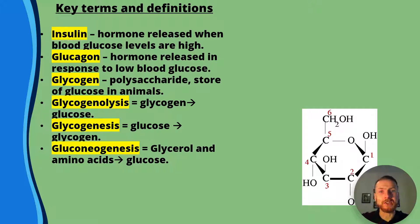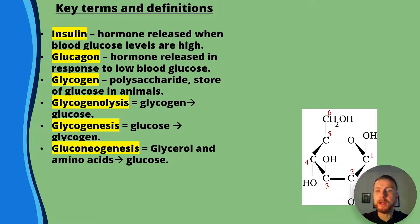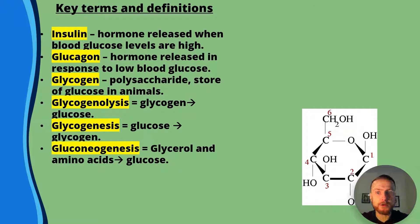Gluconeogenesis: neo means new, so it's making glucose in a new way. Gluco meaning glucose, neo meaning new, genesis meaning create. So glycerol and amino acids become glucose. Fatty acids can also become glucose too. Remember, all of those biological molecules — proteins, carbohydrates, and lipids — are made up of carbon, hydrogen, and oxygen, so you can make glucose from glycerol and amino acids.